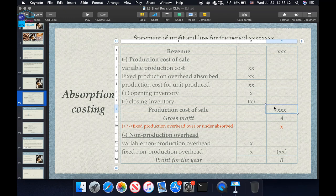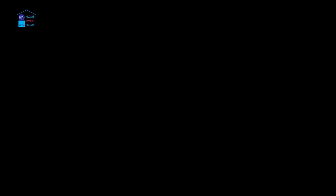Now we will see how we can calculate this. Here we have: Revenue minus cost of sales equals gross profit. We use opening inventory and closing inventory, which is available, with fixed production overhead absorbed to determine the production cost of sales and then the gross profit.